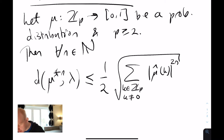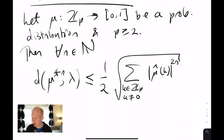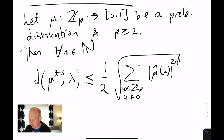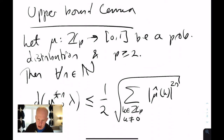So to understand whether the distribution converges to uniform, you just need to compute the Fourier transform of the probability distribution. As we've seen in the previous video, computing the Fourier transform is not too difficult in many examples. The nice thing about this statement is that you also get a quantitative estimate for the distance to the uniform — not just a qualitative convergence result.